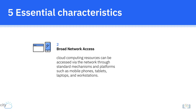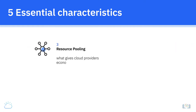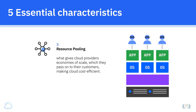The third characteristic, resource pooling, is what gives cloud providers economies of scale, which they pass on to their customers, making cloud cost-efficient. Using a multi-tenant model, computing resources are pooled to serve multiple consumers. Cloud resources are dynamically assigned and reassigned according to demand, without customers needing to concern themselves with the physical location of these resources.